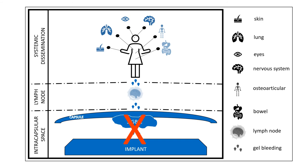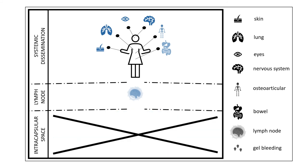When we perform an en-bloc capsulectomy and take away all of the disease capsule and the implant, we probably interrupt the gel bleeding and will no longer have degeneration from the gel bleeding source. The patient will still have silicone that has potentially migrated to organs, but she's not going to have a new inflammatory process inside the capsule. So she's not going to have activation of the lymphocytes and target complaints regarding the breast implant.